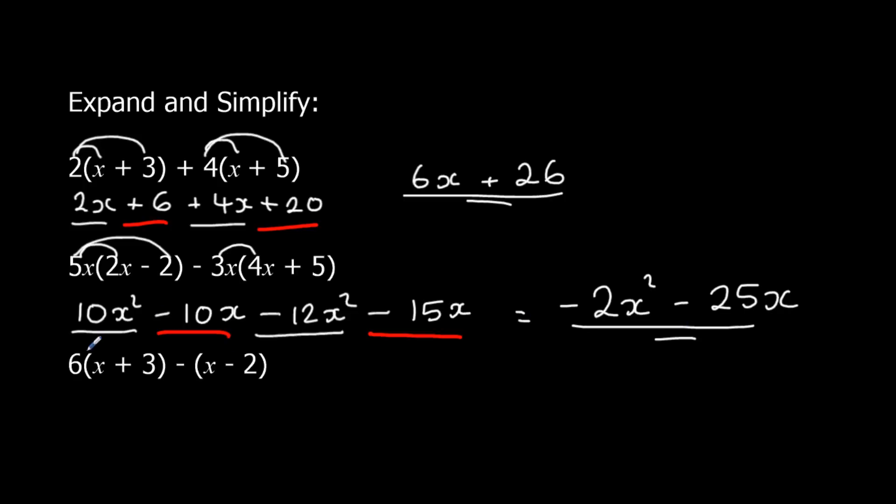And finally, we've got 6 times x, 6x. 6 times 3, 18. Now, there's just a minus here. So we're going to minus the whole bracket. It's easier to write a 1 in there. So we're going to expand the bracket, multiply by minus 1. So minus 1 times x, minus 1x, or just minus x. And minus 1 times minus 2. Minus times minus makes a plus. 1 times 2 is 2.